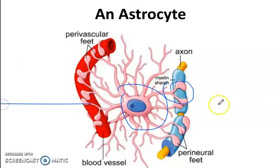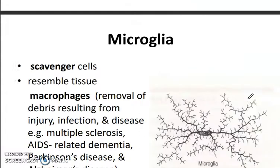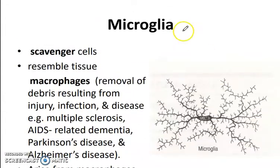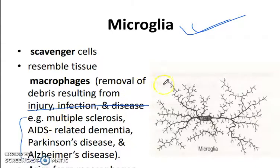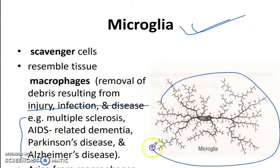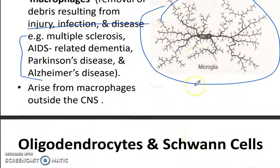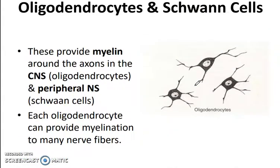Microglia are the phagocytic cells which eat the debris resulting from an injury, infection, or disease. Then there are oligodendrocytes and Schwann cells, which produce and provide the myelin sheath.